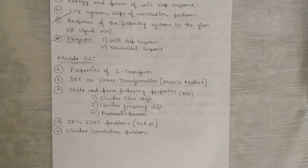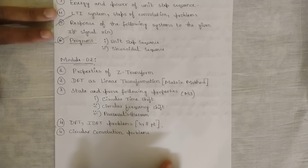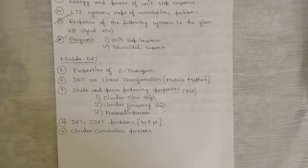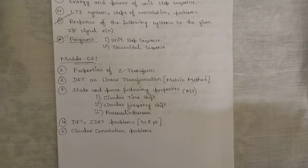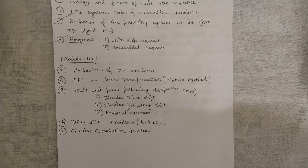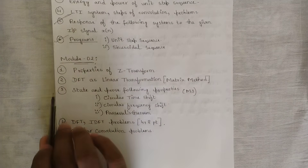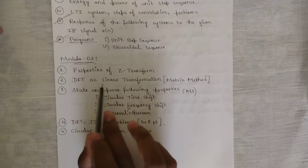Now let's get to module two. In module two, you need to focus on properties of Z-transform — this is very important. There are high chances they might ask this: time reversal property, linearity property, symmetry property, and periodicity property — all properties that come under Z-transform.